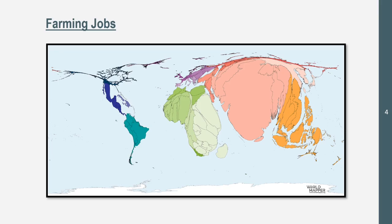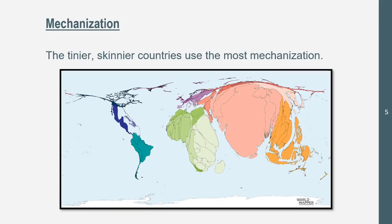Take a minute to guess what this map would look like if it were by mechanization on farms. The tinier, skinnier countries use the most mechanization because these are our more developed countries — they can afford innovations, mechanics, and technology and use less labor. More labor is going to be in our LDCs, meaning more people working on farms, and as we can see, the bigger the country appears on this map.